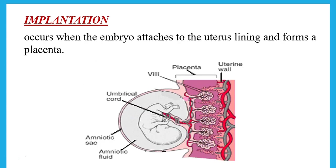Once fertilization happens, the fertilized egg becomes an embryo, which travels down the oviduct into the uterus lining. The uterus lining is where the embryo attaches to the mother's body. This attachment between the fetus and the mother's uterus lining forms what is called the placenta.